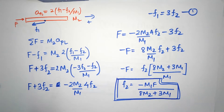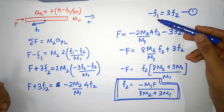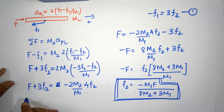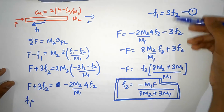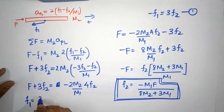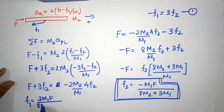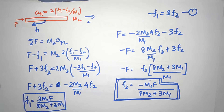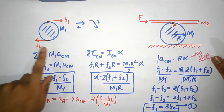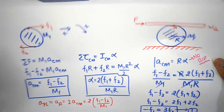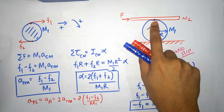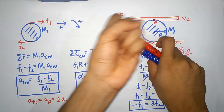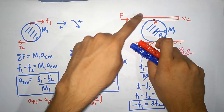We've found f2 = -m1*F / (8*m2 + 3*m1). Since f1 = -3*f2, we get f1 = 3*m1*F / (8*m2 + 3*m1). The positive value for f1 confirms its assumed direction was correct, while f2's negative sign means it actually points forward, not backward. Physically: the ground pushes the cylinder forward to prevent slipping at the bottom, which makes sense.